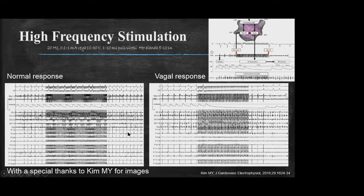HFS application causes two different responses in different atrial parts. In normal atrial myocardium, HFS has no significant effect on PP or PR interval. But in a ganglionated plexus site, HFS causes a vagal discharge effect, resulting in PP or PR prolongation. This is the theoretical background of the technique.